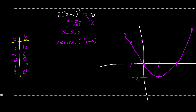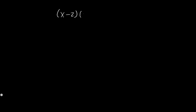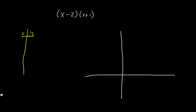Now we're going to look at the factored form, and that'll be it for today. We have (x - 2)(x + 1). We'll make a table and a graph as well. Plotting x values of negative 2, negative 1, 0, 1, and 2. Let's just plug in the factors first: x - 2 = 0 gives x = 2, and x + 1 = 0 gives x = -1.